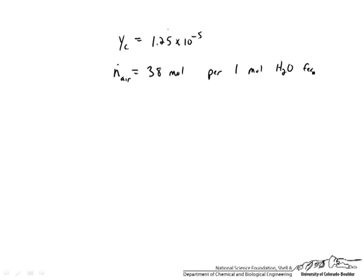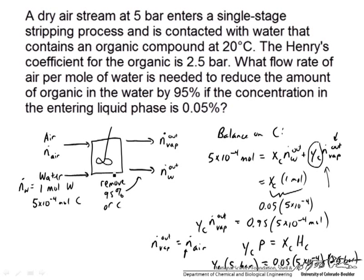Solving for that last unknown, we end up getting N_dot_air equal to 38 moles per 1 mole of contaminated water fed. We have to feed much more air than water, and that is a consequence of this relatively low mole fraction in the air. It would be desirable to increase the Henry's constant to get a higher mole fraction — to do that we would probably need to increase the temperature above 20 degrees. The assumption that the contaminant transfer does not affect overall flow rates is very good: 5 times 10 to the minus 4 moles versus 1 mole and 38 moles is a very tiny fraction, well below the likely uncertainty in our Henry's law constant.